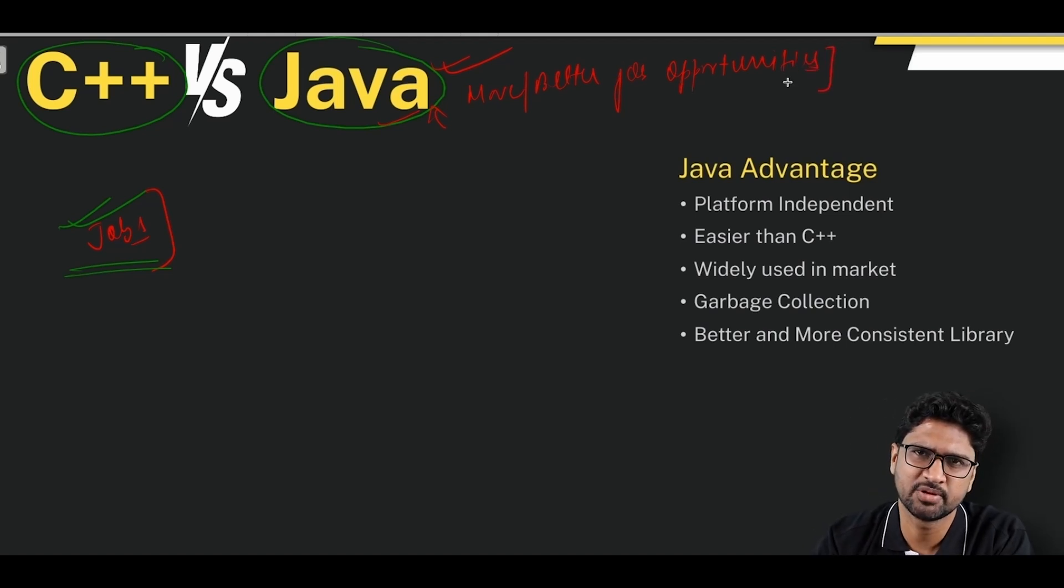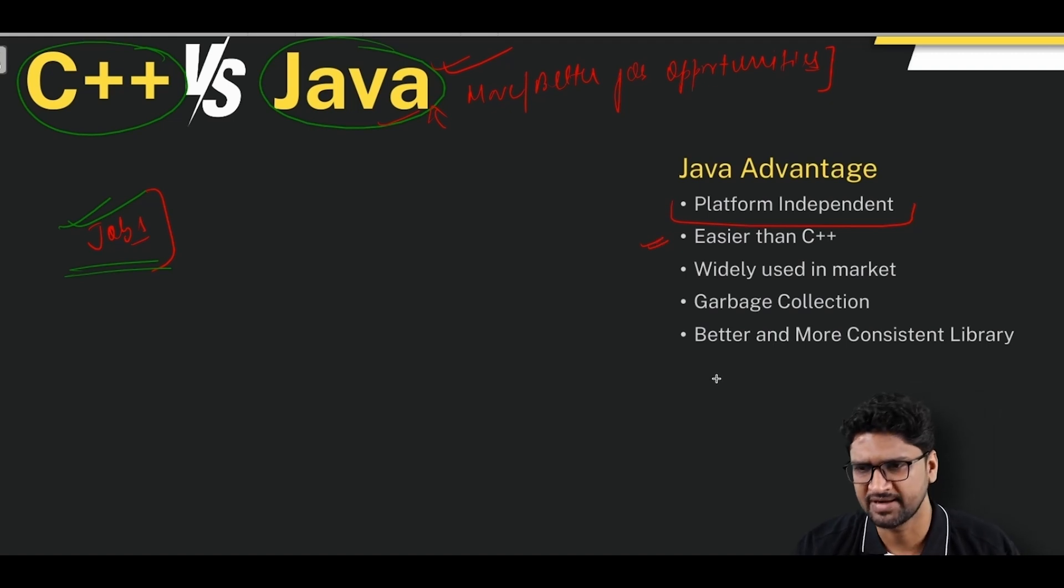If your main goal is jobs, you want to be more employable, you want to learn a programming language so that when you join a company you get to use the same language to solve problems, Java is definitely a choice. One of the biggest advantages of using Java over C++ is that you have more and better job opportunities. This is a practical reason I'm saying you should prefer Java over C++.